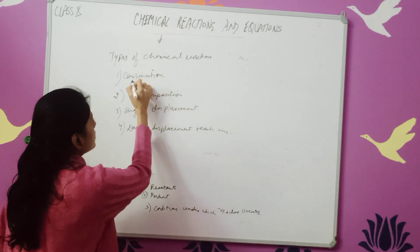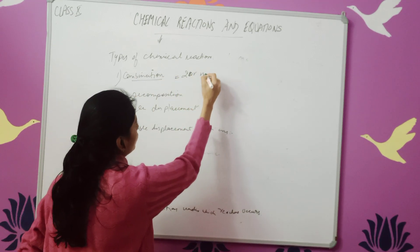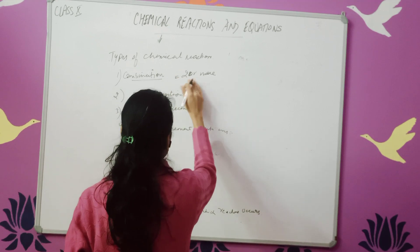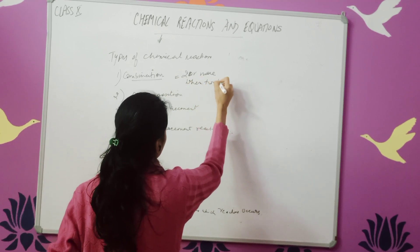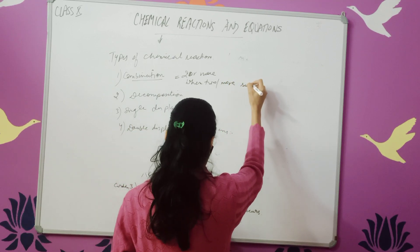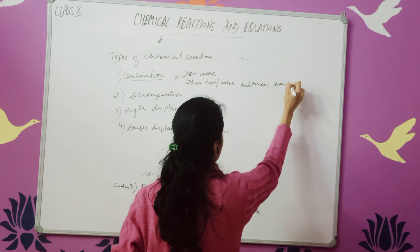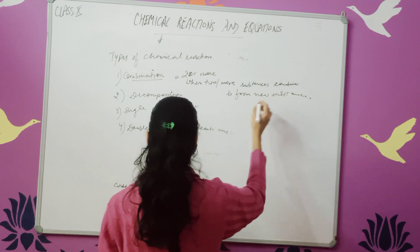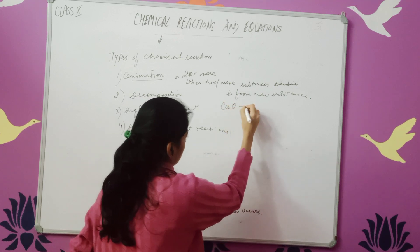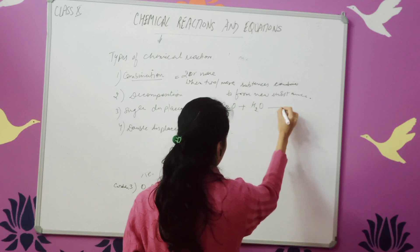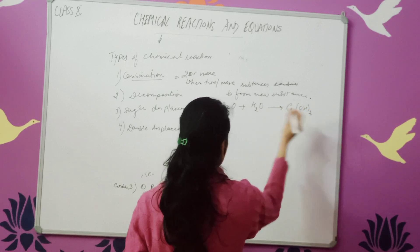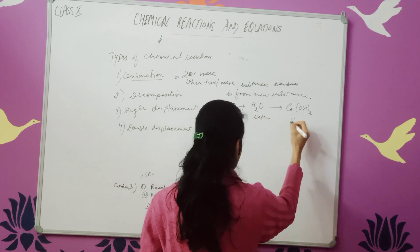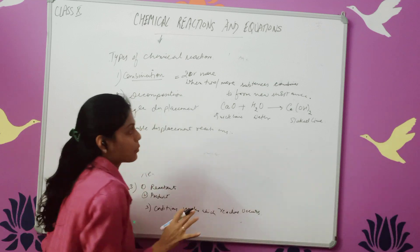What is a combination reaction? Combination means two or more substances combine to form a new substance — that is a combination reaction. For example, CaO plus H2O combine to form Ca(OH)2. CaO is quicklime; when we add quicklime and water, we get slaked lime.